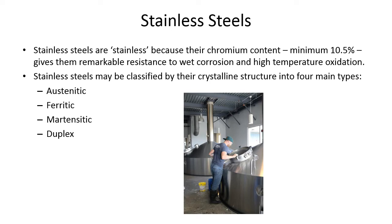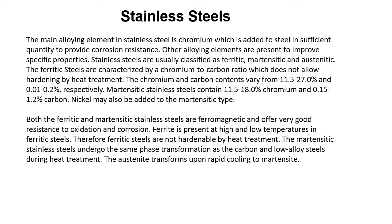Stainless steels are stainless because of their chromium content. The main alloying element in stainless steels is chromium, which is added to steel in sufficient quantity to provide corrosion resistance. Other alloying elements are present to improve specific properties.